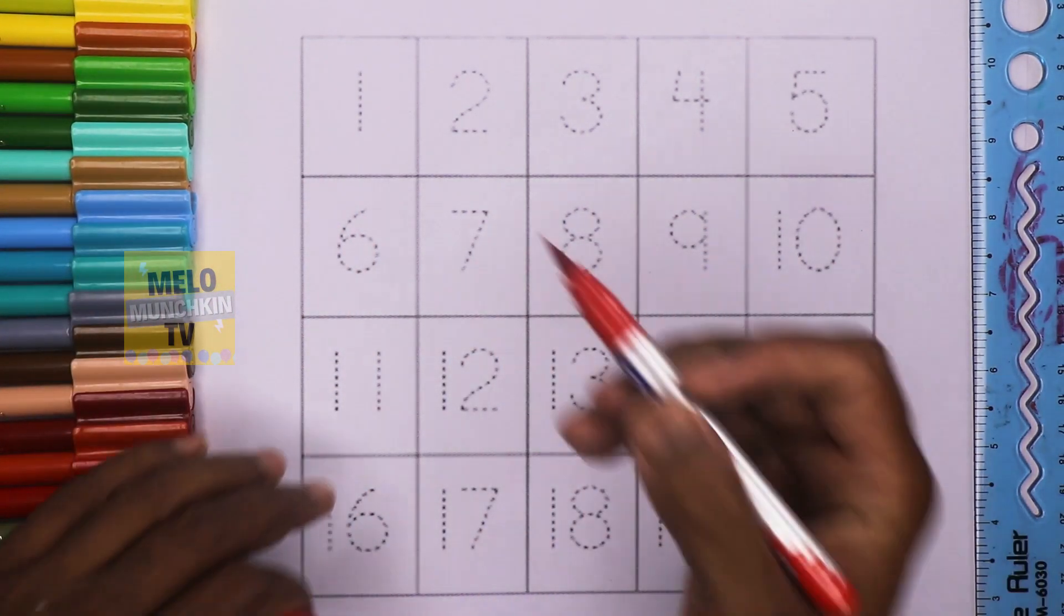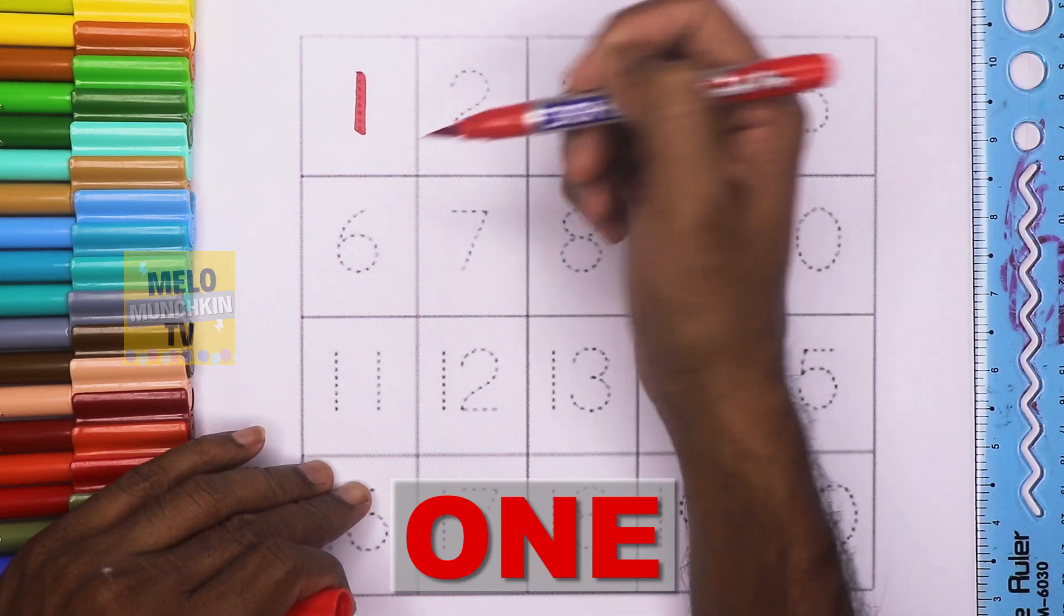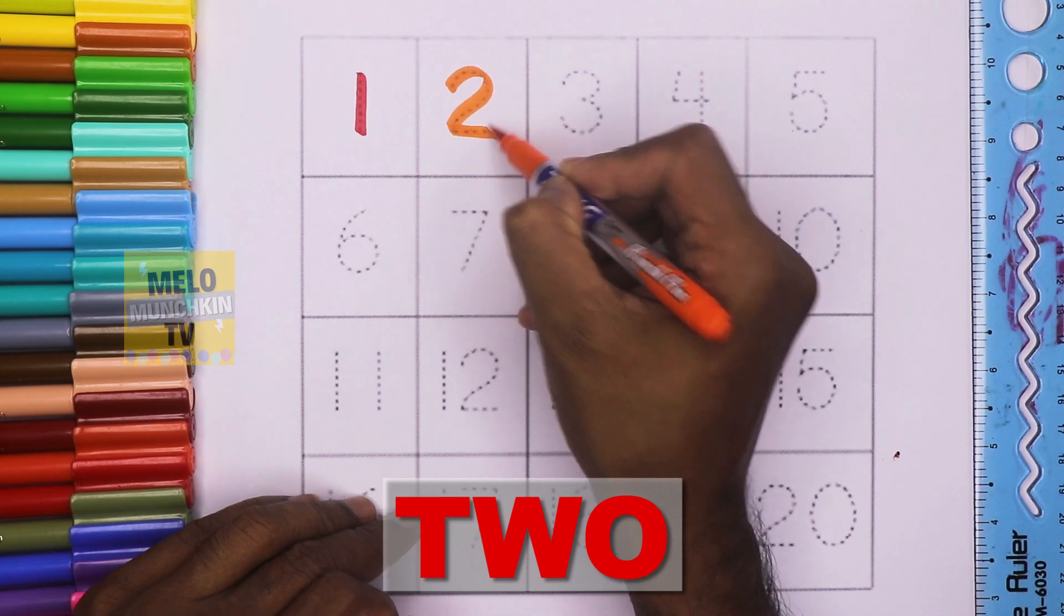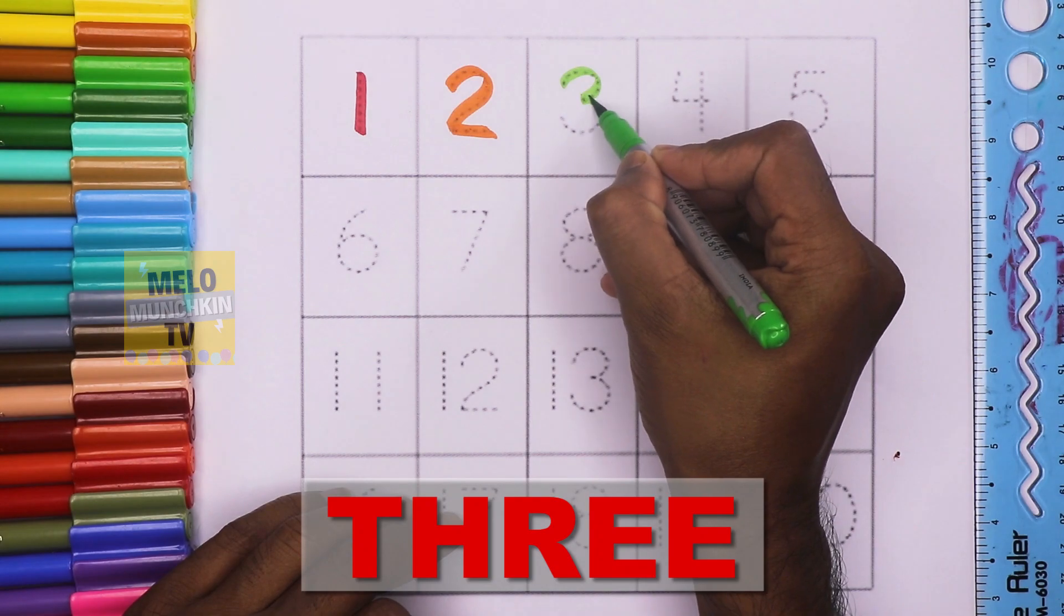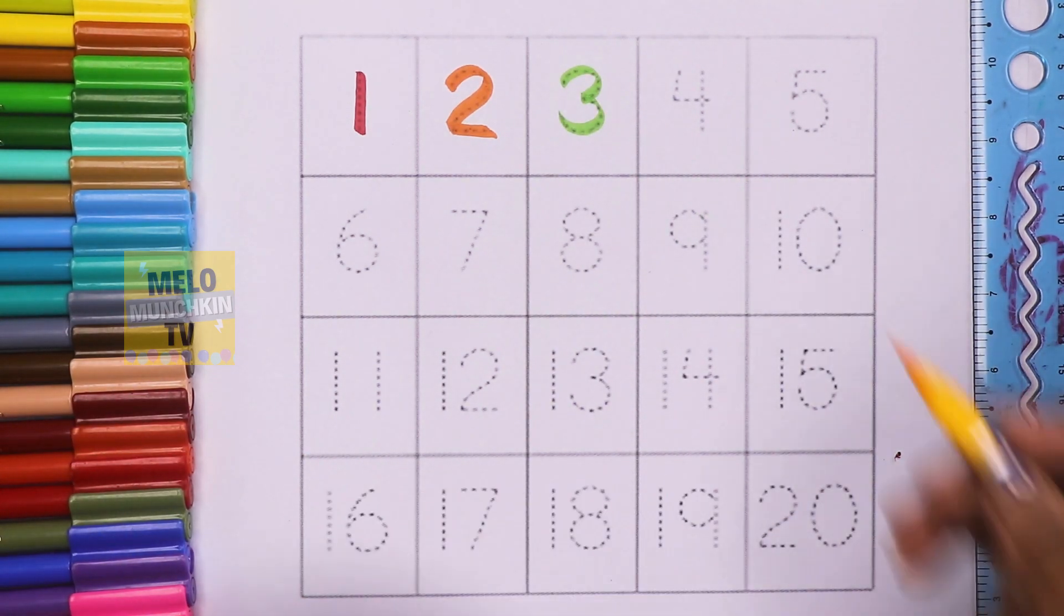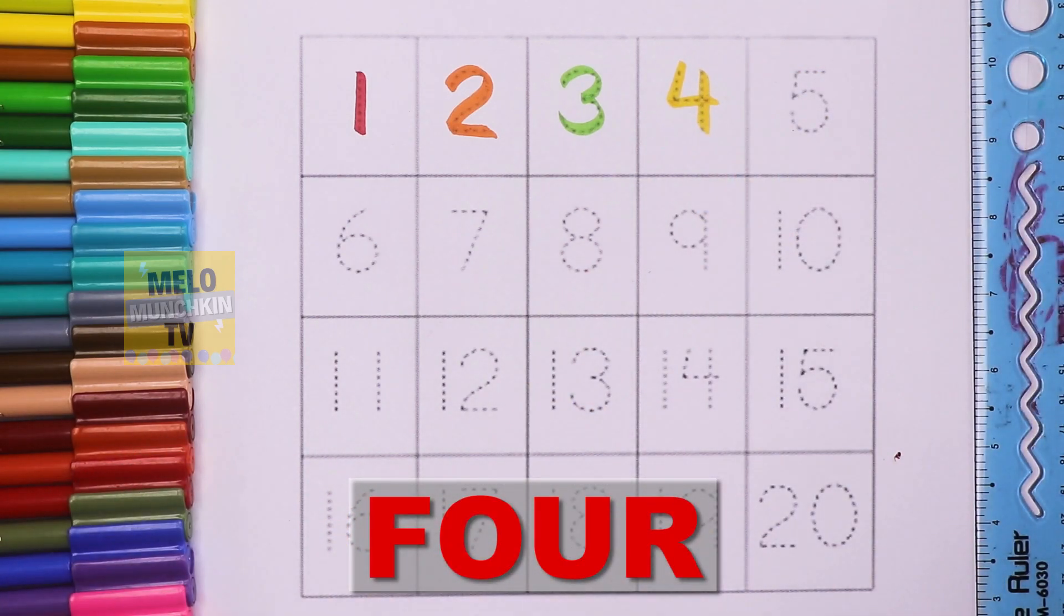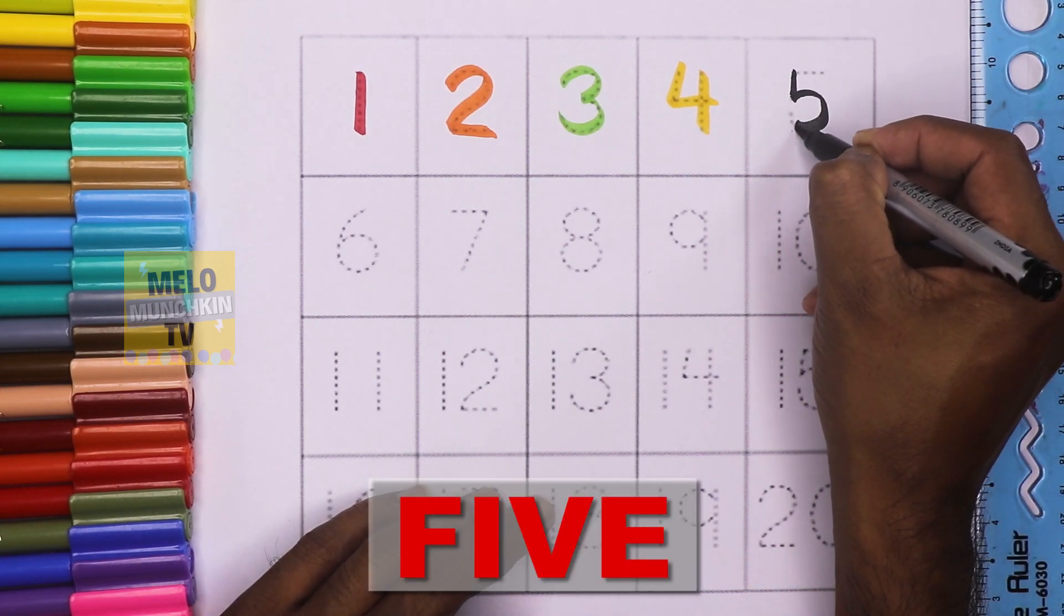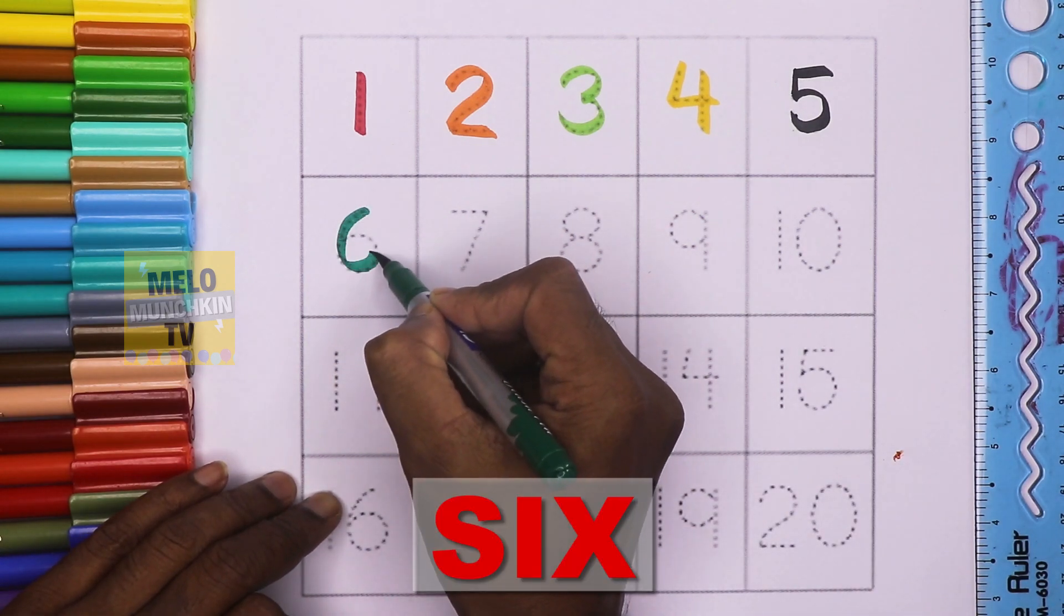This is number one: O-N-E, one. Number two: T-W-O, two. Number three: T-H-R-E-E, three. Number four: F-O-U-R, four. Number five: F-I-V-E, five. Six: S-I-X, six.